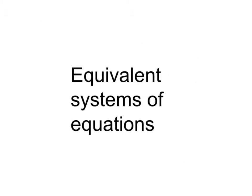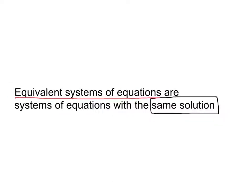All right, so what we're doing today is we are going to try to get three in a row on Khan Academy on the activity titled Equivalent Systems of Equations. Before we start, I want you to understand this sentence right here. Equivalent systems of equations are systems of equations with the same solution. So two systems of equations are equivalent if they have the same solution. You for sure need to write that down.